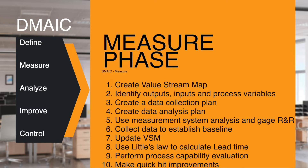The easiest way to start is by creating an as-is process flow diagram and including metrics such as cycle time, flow time, process capacity, and current quality levels.